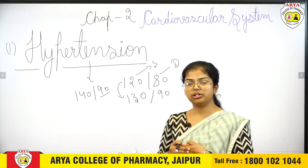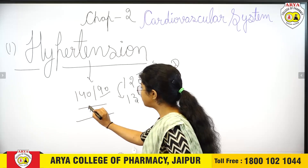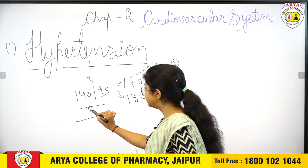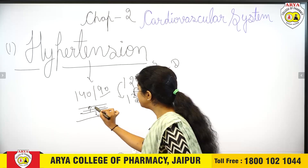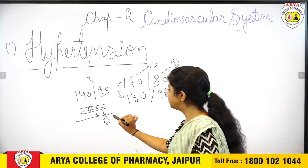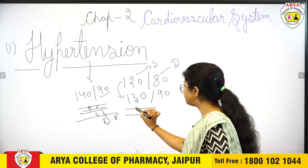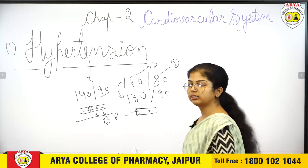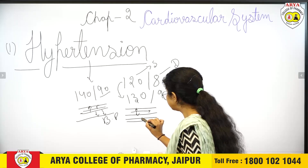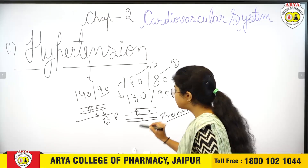Blood pressure is the pressure — the force of blood — against the walls of arteries. The force that blood exerts on the artery walls is called blood pressure. This pressure occurs when normal arteries have enough space for blood to flow easily, but when arteries become narrow or constricted and cannot provide enough space, blood starts applying pressure on the artery walls.